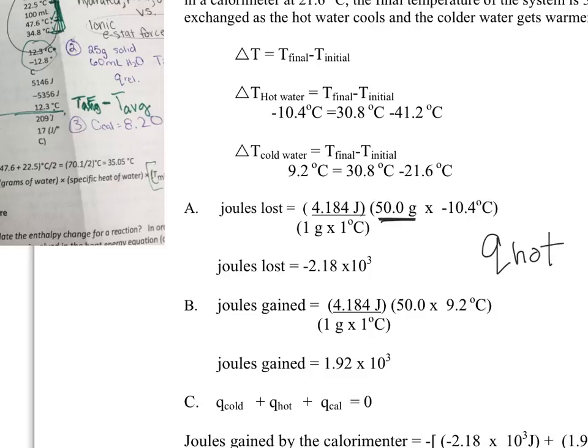which would be 100 grams. You have your change that you've already found, and you have your CP of water. And so you're just going to multiply that and get your number.